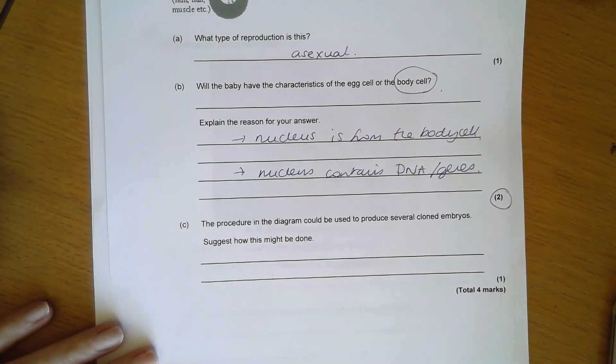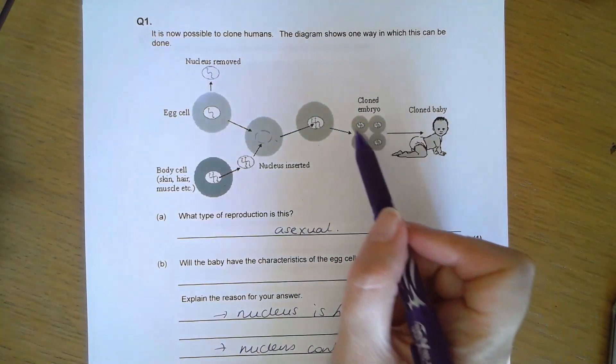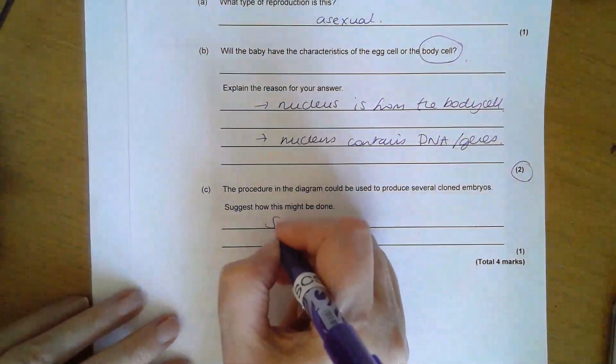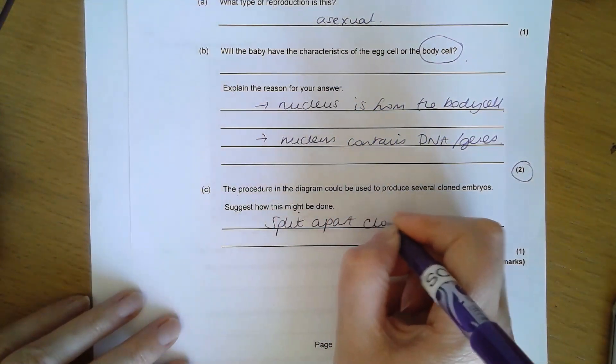How could the procedure be used to produce several cloned embryos? You can see at the beginning of the embryo formation I have several cells, so I could split those apart. I could split apart that cloned embryo or the cells in the cloned embryo.